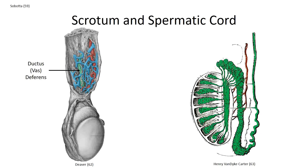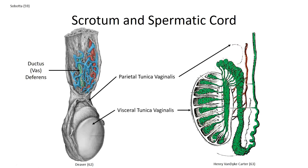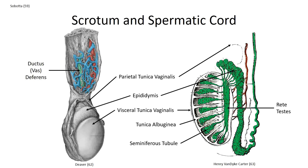The testicle is an ovoid organ responsible for the production of spermatozoa. We previously discussed its descent through the inguinal canal through the processus vaginalis. Distally, the processus vaginalis opens up as the tunica vaginalis, a thin membranous lining. A parietal layer lines the inner wall of the scrotum while a visceral layer covers the testicle. A thick fibrous connective tissue called the tunica albuginea — named for its white appearance — forms the outer cortex of the testicle. Invaginations of the tunica albuginea divide the testicle into lobules. Within the lobules are the seminiferous tubules, where the spermatozoa are produced. The tubules converge to form the rete testis, and from there spermatozoa pass into a coiled duct within the epididymis for storage and maturation. The epididymis tapers posteriorly as the duct becomes less coiled, and the base of the tail is where it becomes the vas deferens.